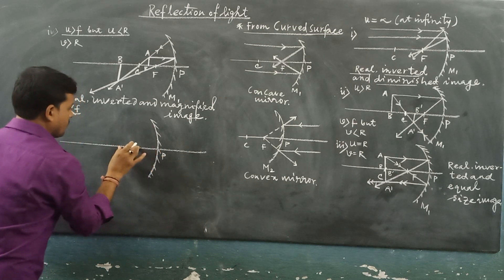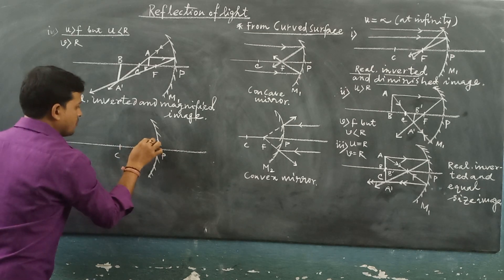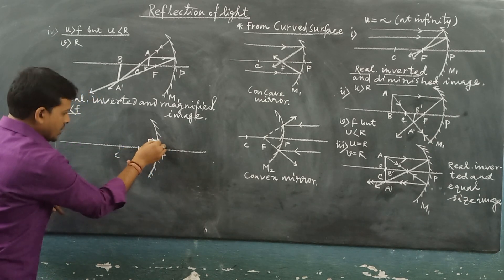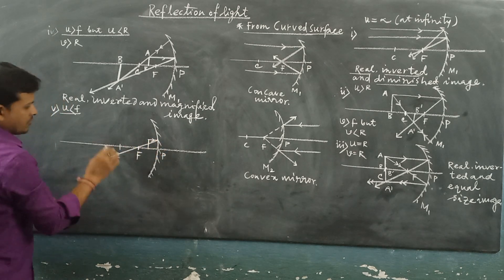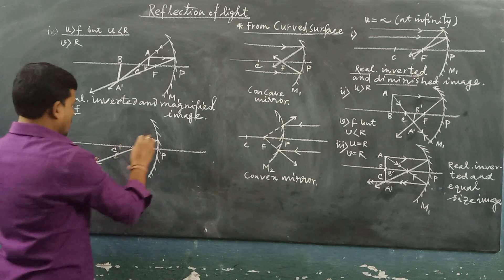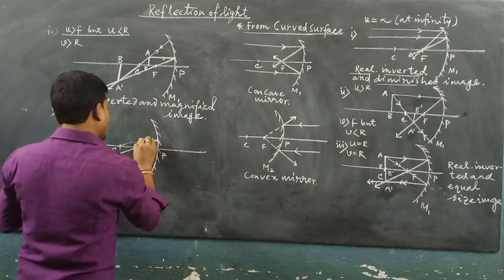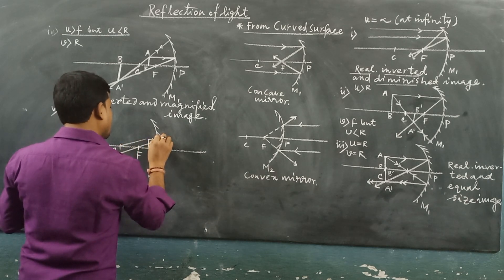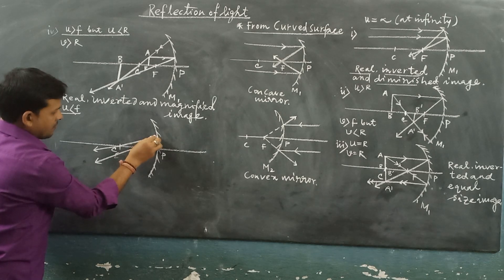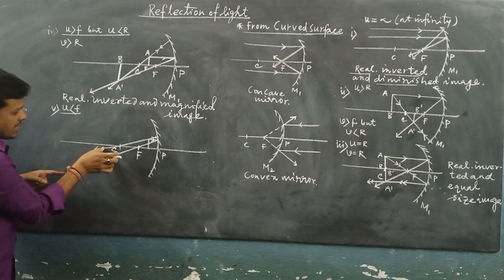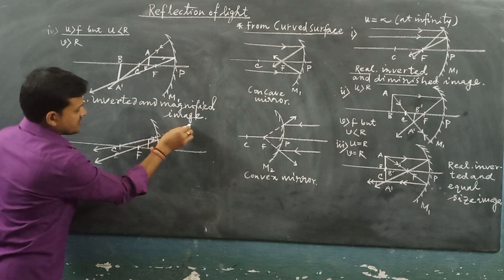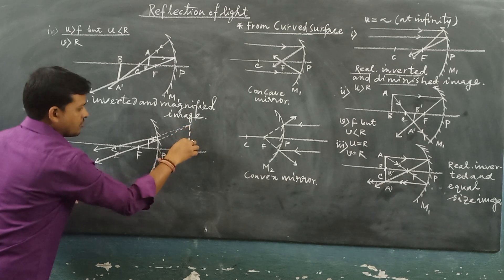So here we have P, F, and C, and now the object is in between P and F. One light ray parallel to the principal axis passes through the principal focus. Another light ray approaches towards the center of curvature and after reflection from the mirror, these two light rays on the back side of the mirror intersect at a point — this is the virtual image.